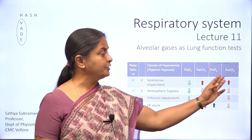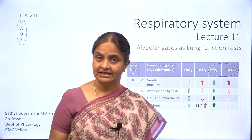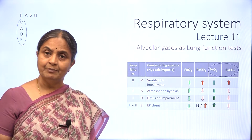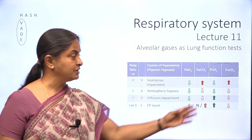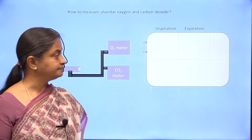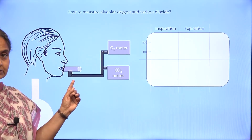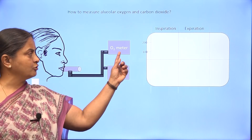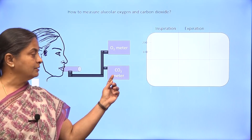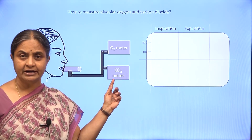Having understood the value of alveolar gas concentrations as lung function tests, we will see the method by which alveolar gas concentrations are estimated. There is an oxygen meter and a carbon dioxide meter available commercially. This is an infrared carbon dioxide meter — it is called a capnometer.